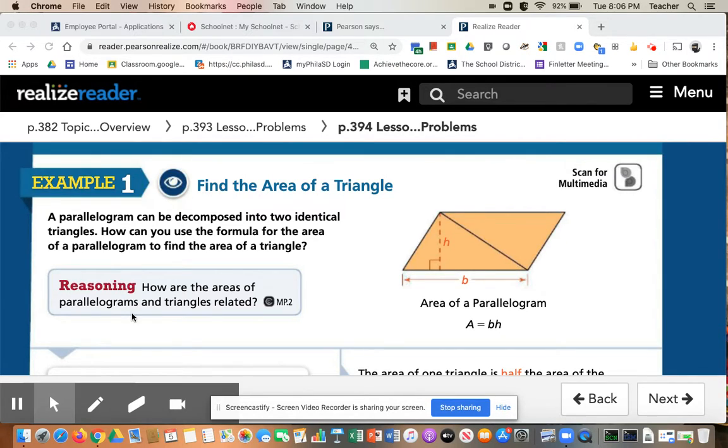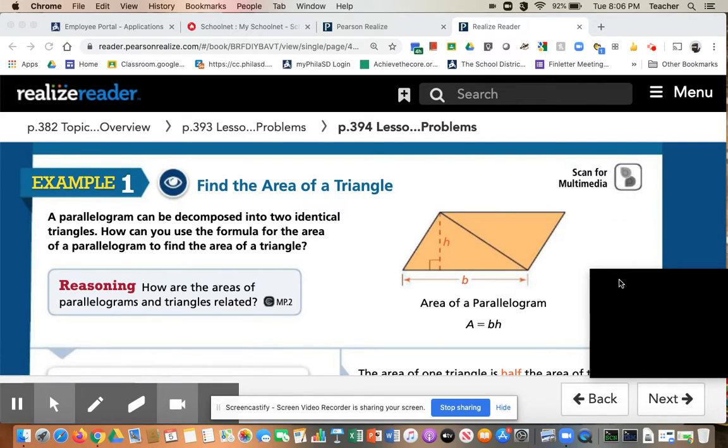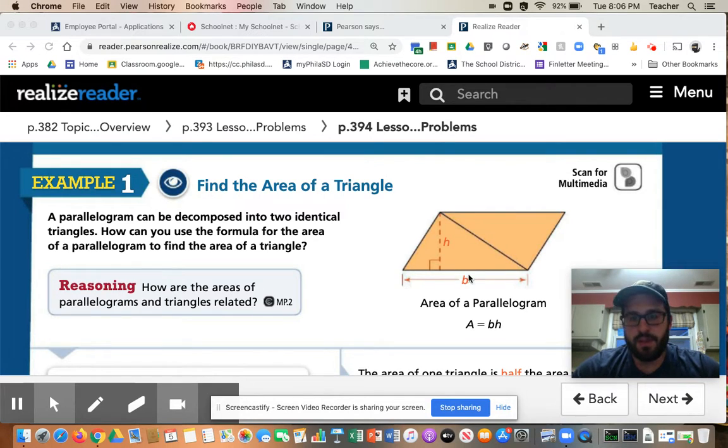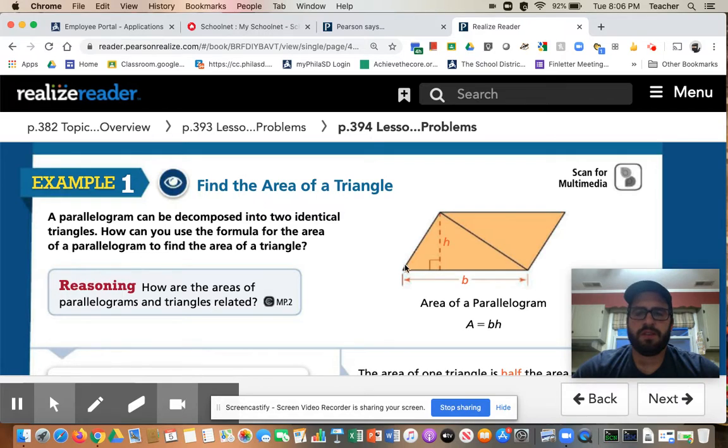So the last couple of days, guys, you have been learning how to find the area of a parallelogram. You do the base times the height. Now, if you take a look at this picture, this picture is excellent visual for you. To find the area of a triangle, right? If you look at this picture of this parallelogram, you'll notice that if you cut it right in half, you get two triangles.